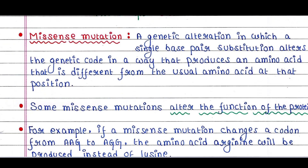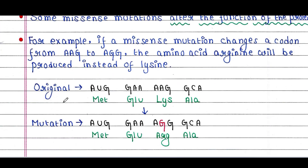Next is missense mutation — a genetic alteration in which a single base pair substitution alters the genetic code in a way that produces an amino acid different from the usual amino acid at that position. Here is an example: this is the original sequence, and the mutation occurs when this A base is substituted by G.